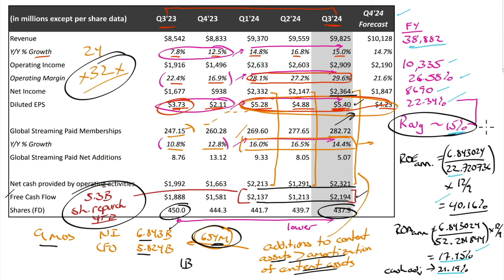If they push into sports, the content cost is astronomical and there are many competitors in that space — I don't know that you'd end up with the same margins. Netflix is a good company: good earnings, good results, good growth, good margins, good return on equity, good return on assets. 32 times forward earnings — I think it's priced in. But it has momentum behind it; it wouldn't surprise me if it continues to go up into year-end, especially with the strong Q4 lineup. I think of Netflix as a quarter-by-quarter decision.